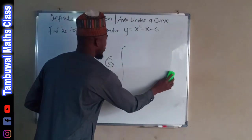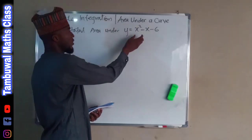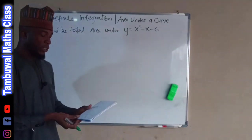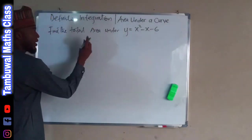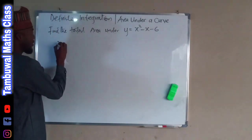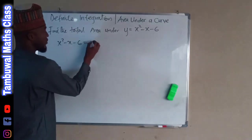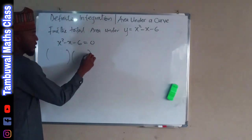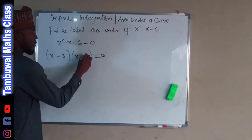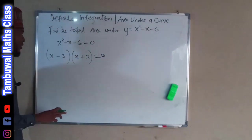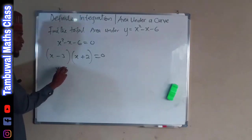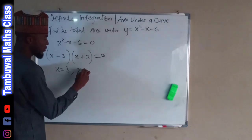Now let us look at the first problem. We are asked to find the total area underneath this curve, but we are not given a sketch, so we have to make one. First, we find the x-intercepts by finding the zeros of the equation: x squared minus x minus 6 equals 0. By factorization, we get x minus 3 and x plus 2, which gives us x equal to 3 and x equal to negative 2.